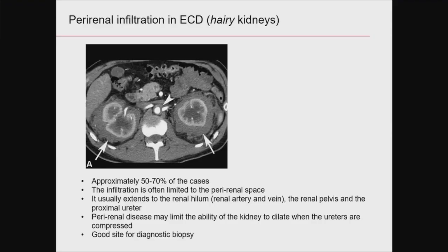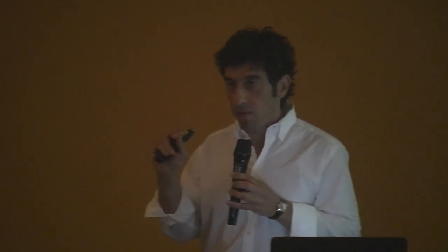Fortunately, this is not always a complication that leads to renal failure or renal insufficiency. We usually detect retroperitoneal peri-renal infiltration in about 50 to 70% of cases. This is a very typical aspect and very useful for physicians who can recognize the disease thanks to this kind of infiltration and also thanks to long bone infiltration — these are two very typical signs. There are only a few other conditions characterized by peri-renal infiltration of this type.